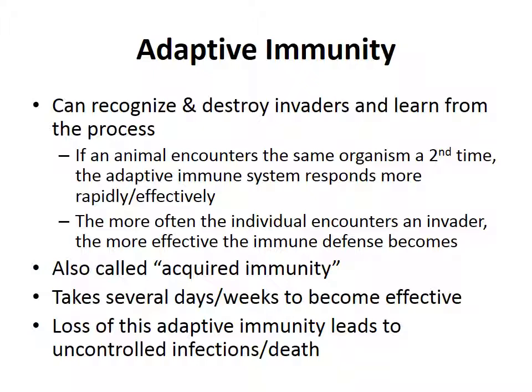Adaptive immunity — now we're getting into the part of the immune system that has memory. The adaptive immune system can recognize and destroy invaders and learn from the process. If an animal encounters the same organism a second time, it will respond more rapidly and effectively. The more often an individual encounters an invader, the more effective the immune defense becomes. This is like when you were a kid in daycare getting hundreds of colds a year — now you get one or two because your adaptive immune response to those organisms is ready to go.